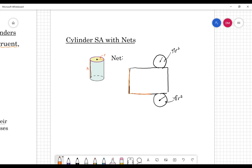But then how do we find the area of this rectangle right here? Well, rectangles are base times height. So the base of this, if you think about, again, that can, if I unwrap the label from this, that has to wrap all the way around my circular base right here.